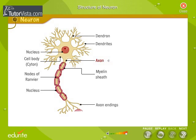The axon leads the nerve impulse away from the cytin. Observe the dendrites — they are highly branched cytoplasmic processes. Unlike axons, dendrites lead the nerve impulses towards the cytin.